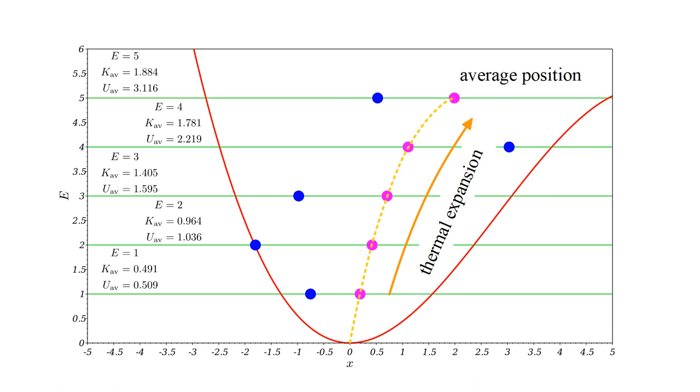Second, as total energy increases, the fraction due to average potential energy decreases, while the fraction due to average kinetic energy increases.